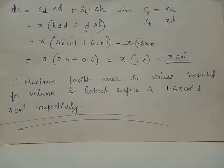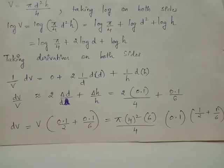This gives ds = π × (0.4 + 0.6) = π × 1.0, so ds = π cm². This is the maximum possible error while computing the value of lateral surface of the right circular cylindrical can.